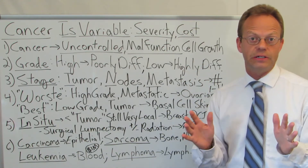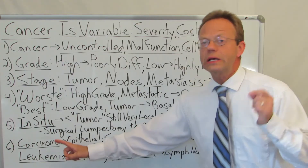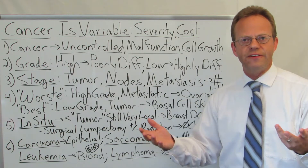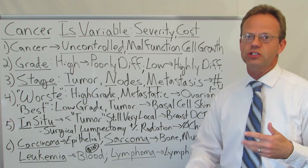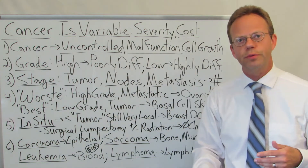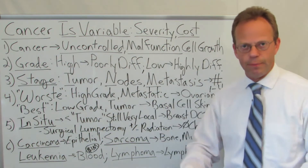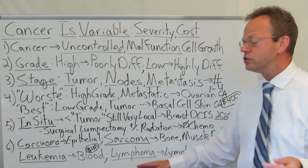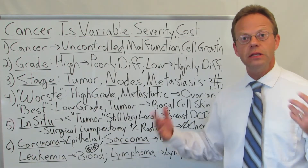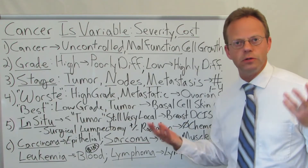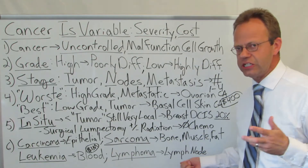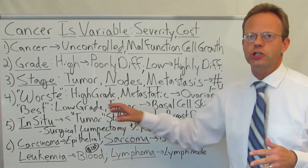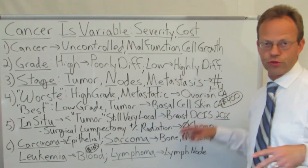Leukemia is referred to as a liquid tumor — a tumor of the bone marrow — where the tumor manifests as your blood being thrown all out of whack: either your white blood cell count is super high and red blood cell count super low, or both counts are super low. Those are liquid tumors, not solid tumors. Then there are lymphomas, which are cancers of the lymph nodes or the spleen — part of your immune system. That's where you hear Hodgkin's and non-Hodgkin's lymphomas. There are also some mixed tumors, but these are the major classifications.